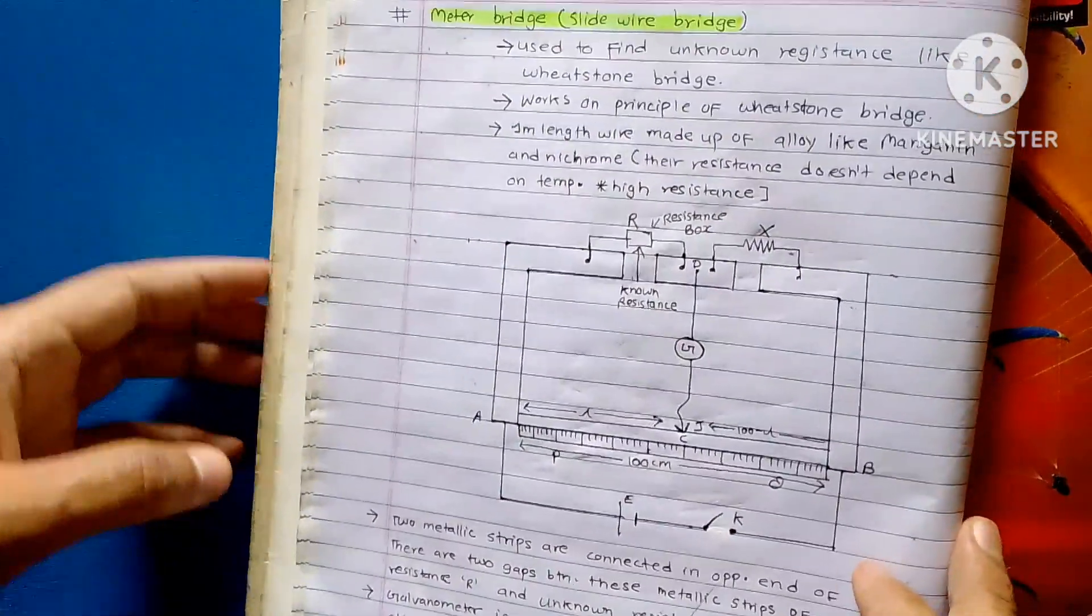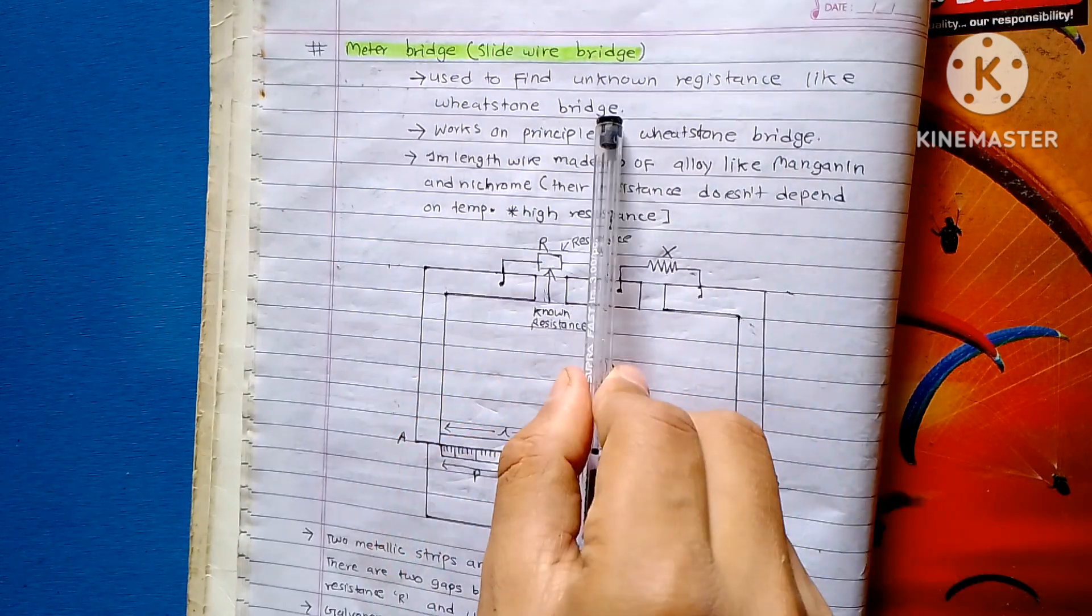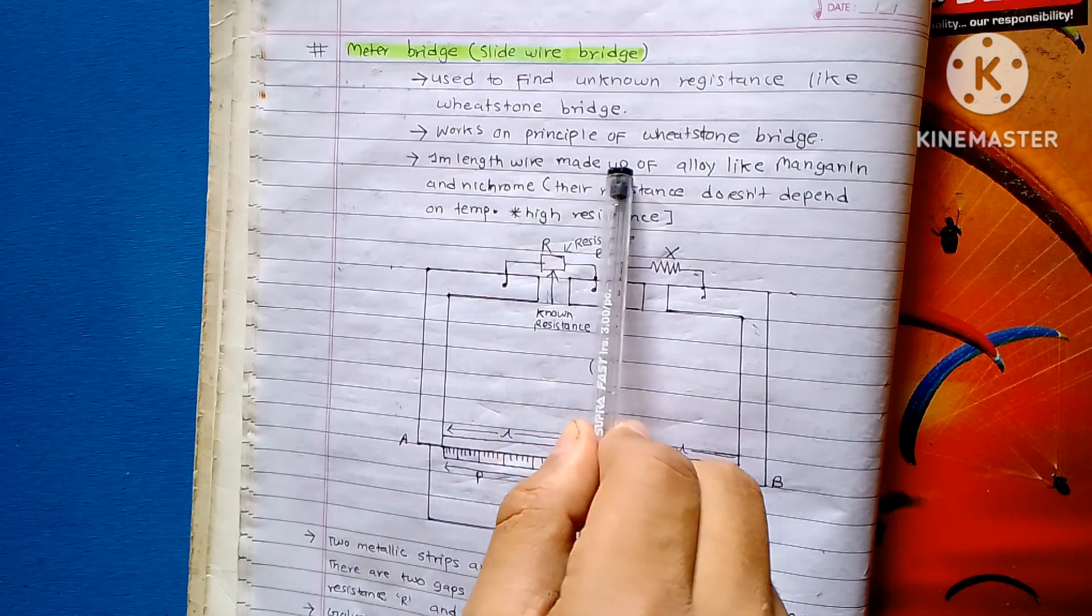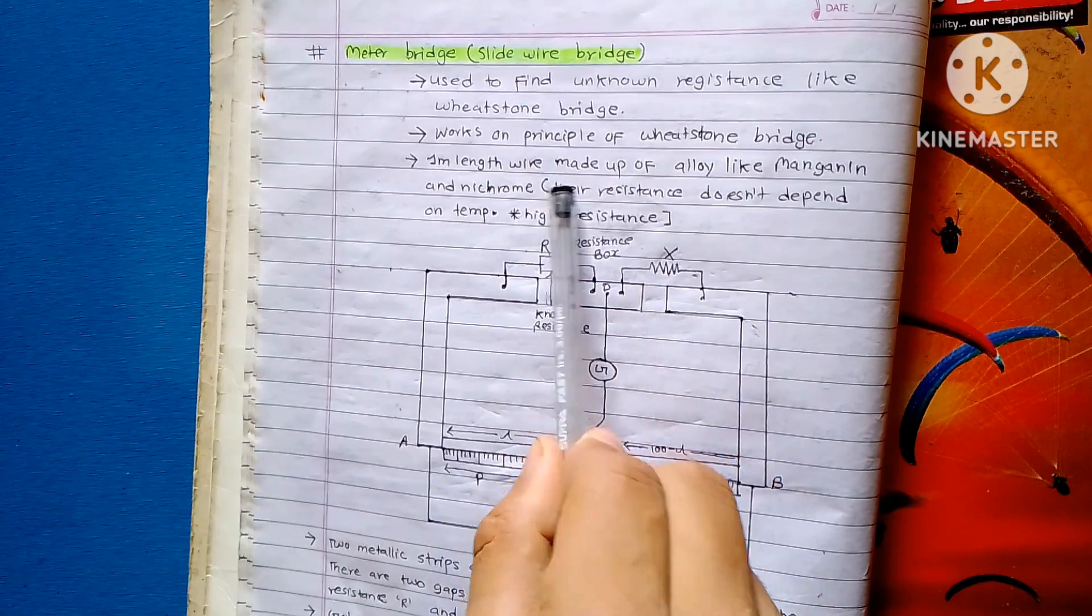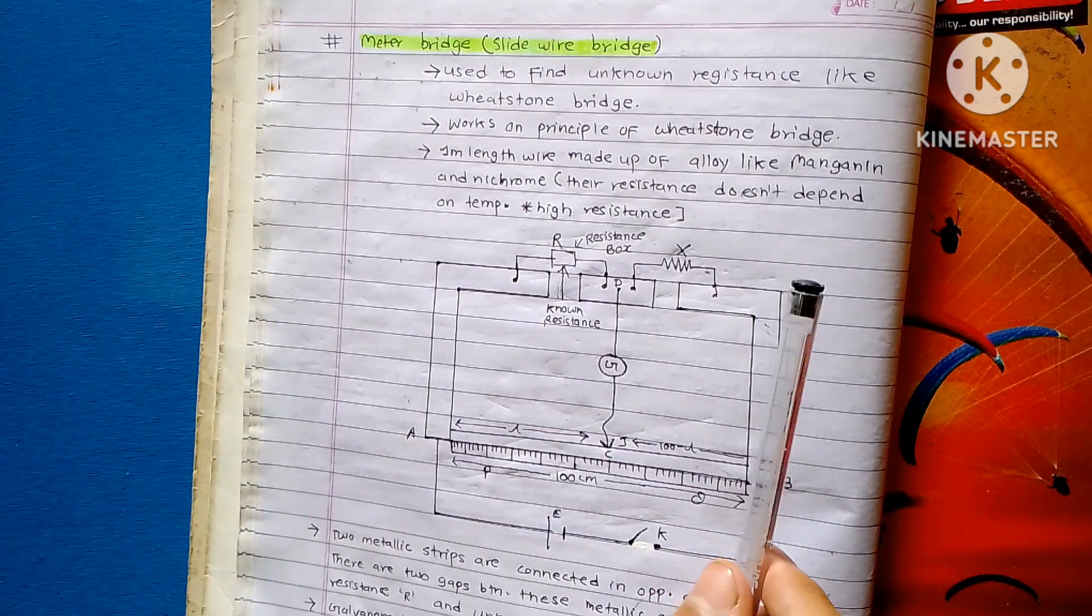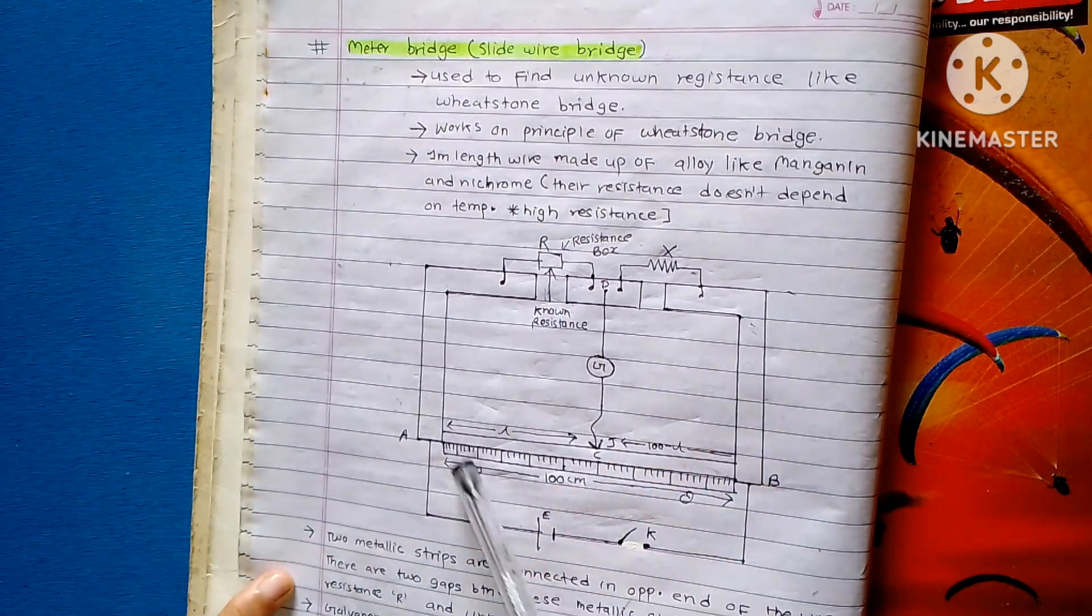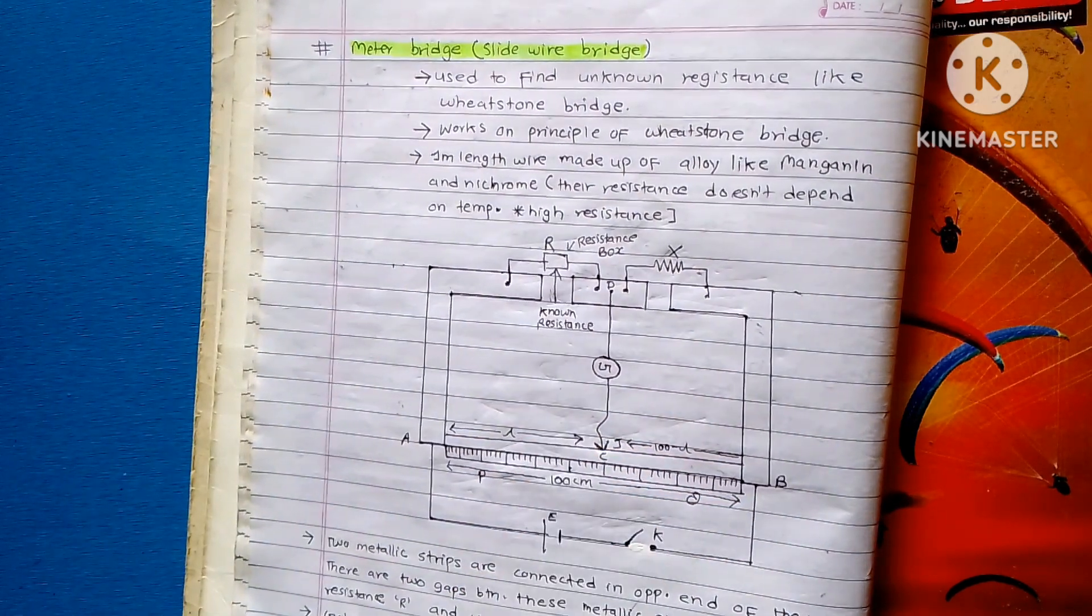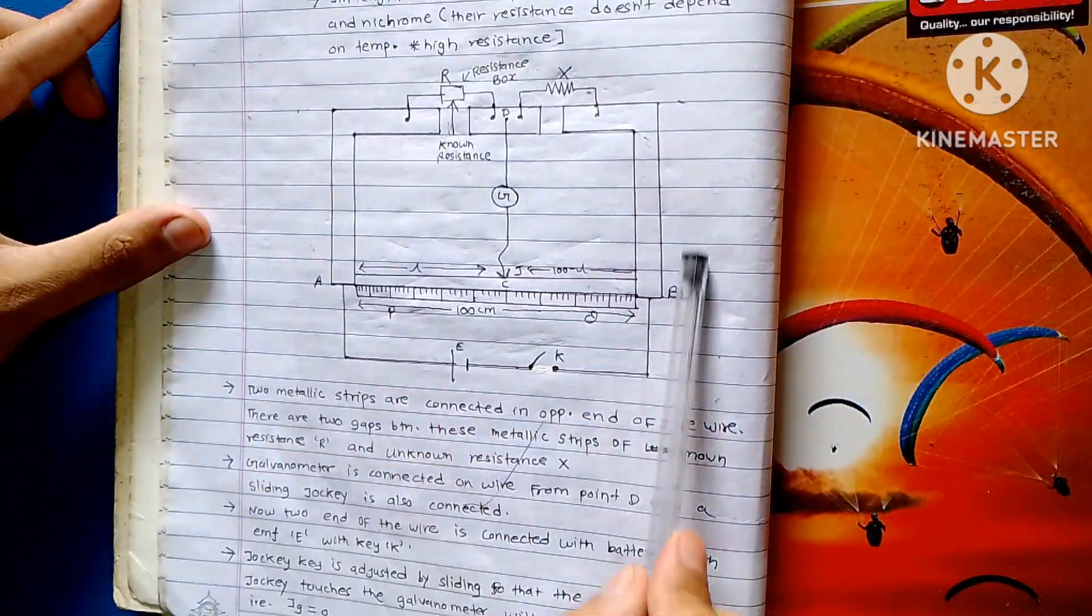It is used to find unknown resistance like Wheatstone bridge. Wheatstone bridge is used to find unknown resistance. It works on the principle of Wheatstone bridge. One meter length wire made up of alloy like manganin and nichrome, and their resistance depends on temperature. Low temperature coefficient. High resistance.